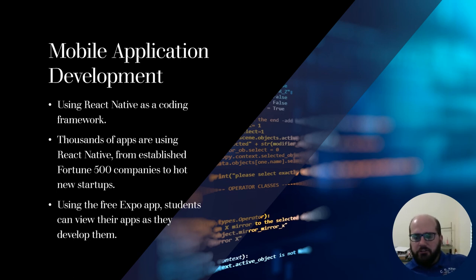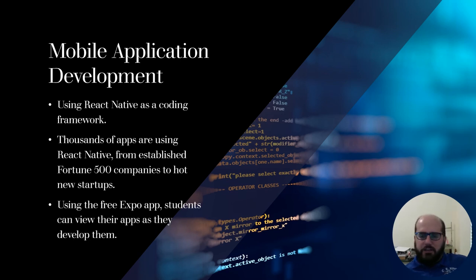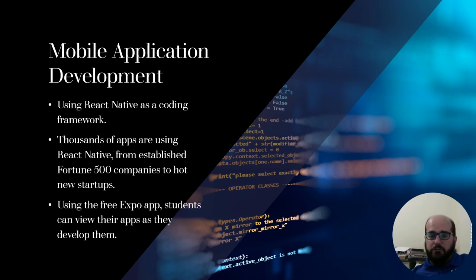Mobile Application Development is also an open-ended course. In the past I used a language called Lua, but the primary reason for the shift is industry relevance. This year we've decided to use React Native, because applications built in the industry are often built in React or Angular — and React is considered the gold standard right now. There are thousands of apps using React Native, from Fortune 500 companies to brand new startups. The language is based on JavaScript, making it accessible with a lot of industry support.